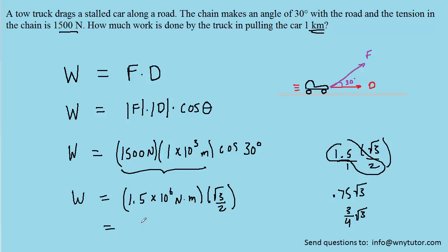So one way of expressing this answer would be 3 fourths radical 3 times 10 to the power of 6 Newton meters. Or if you prefer, you can pick up your calculator and punch that all in. And you would get roughly 1.3 times 10 to the power of 6 Newton meters. And so we can use this as our correct answer, or this right here.